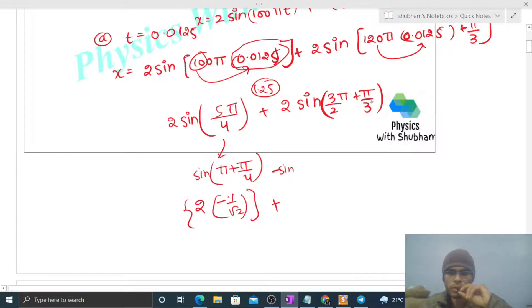This will be 3 pi by 2 plus pi by 3, so it will be minus cos of pi by 3. And cos of pi by 3 is 1 upon 2, so this will be minus 1 upon 2. Put this and multiply by 2.